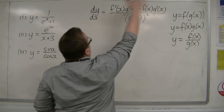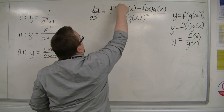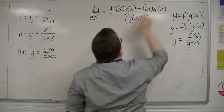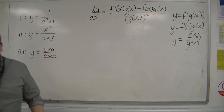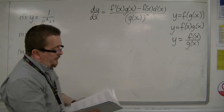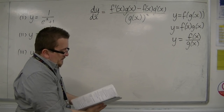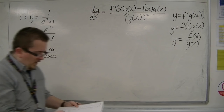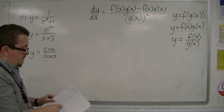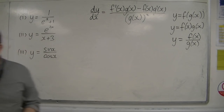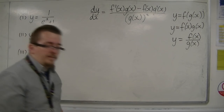So: bottom times the derivative of the top, take away the top times the derivative of the bottom, over the bottom squared. This formula is given to you in the formula booklet — it's on the differentiation list on page 7, about midway down. So it is given to you; you just need to know how to use it.